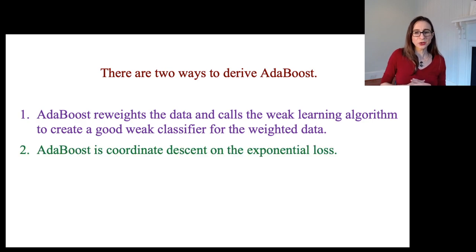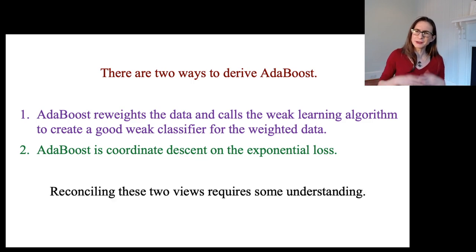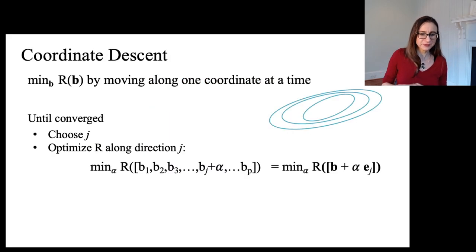The second way is that it's coordinate descent on the exponential loss. So how do we reconcile these two views? I mean, even what space are we working in for coordinate descent? Well, let's think about what coordinate descent is. It's a method that minimizes a function by moving along one coordinate at a time. So you start out and you minimize the function by moving along that coordinate and then pick another coordinate and you minimize and so on and so forth until the function is minimized.